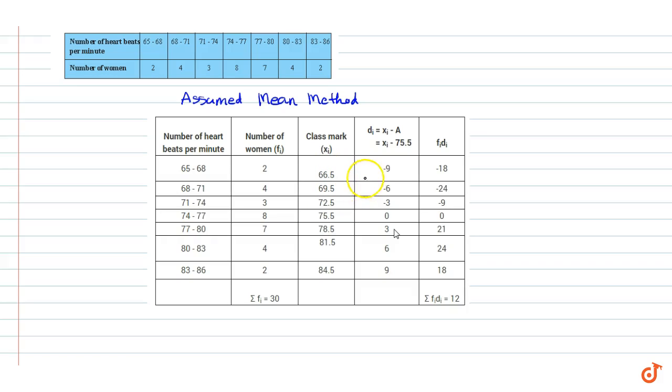In the first interval we have di equals 66.5 minus 75.5, that is minus 9. In the second interval, di equals 69.5 minus 75.5, that is equal to minus 6, and so on. fi di represents the frequency fi multiplied by deviation di. In the first interval, fi equals 2 and di equals minus 9, so multiplying these two quantities we get minus 18, and so on.